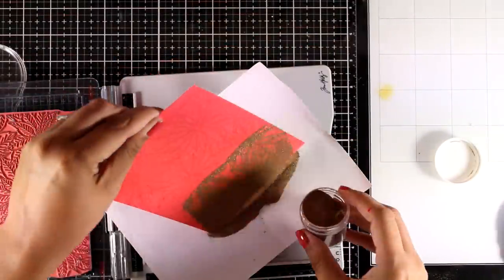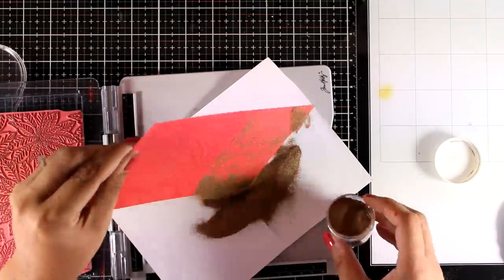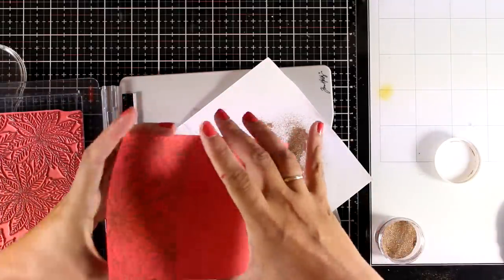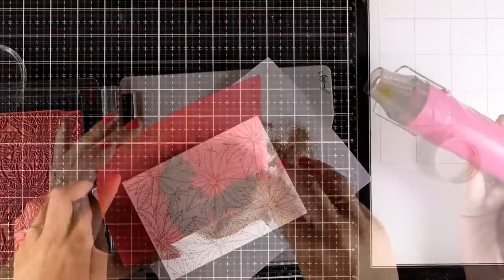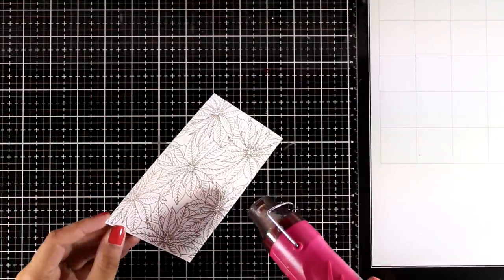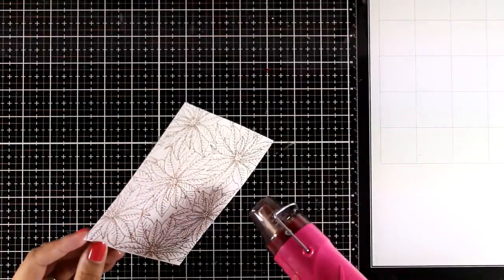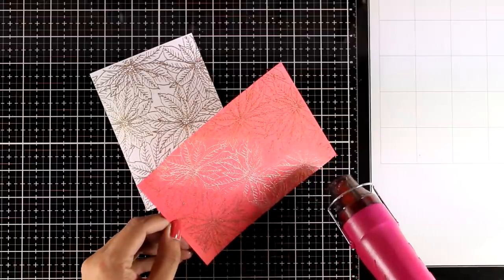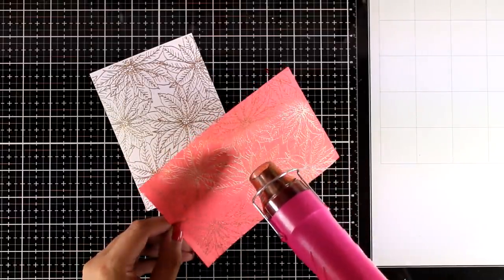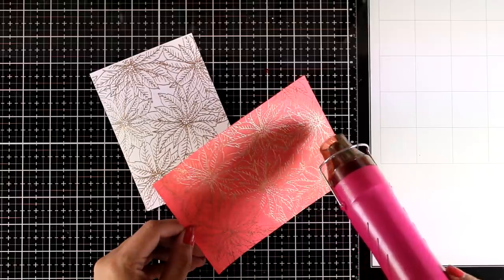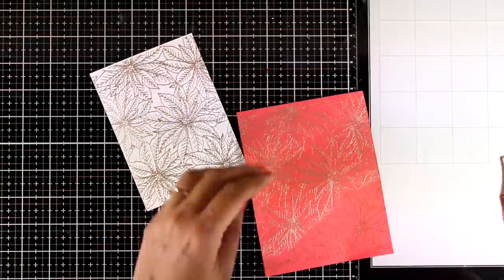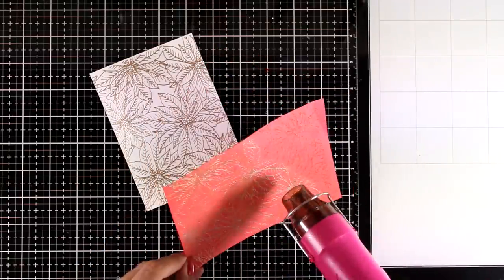So here I'm stamping the same design on a red cardstock and I will apply again the same embossing powder. And of course I used my heat gun on both of those panels to set the powder. And of course you can mass produce cards if you create many of those panels and you can even use different colors of cardstock as well as different colors of embossing powder.